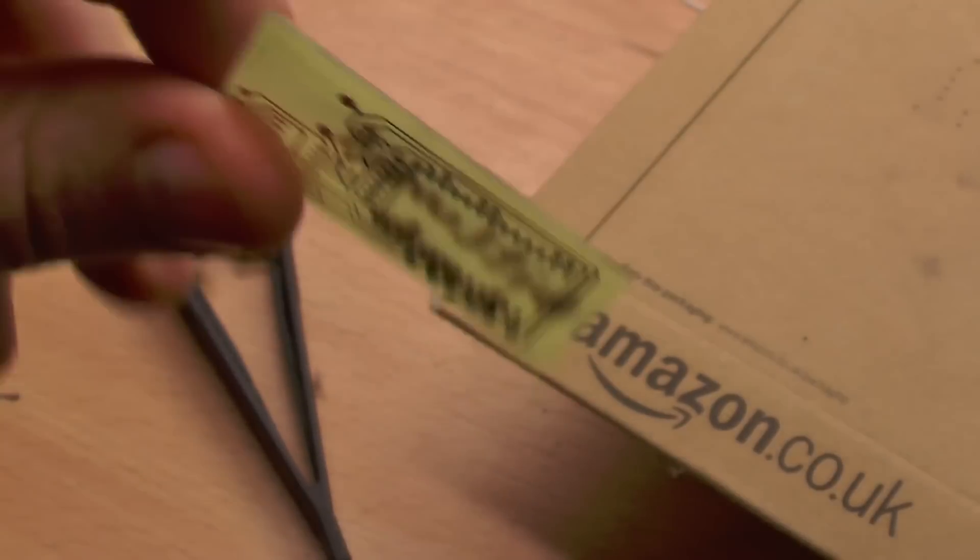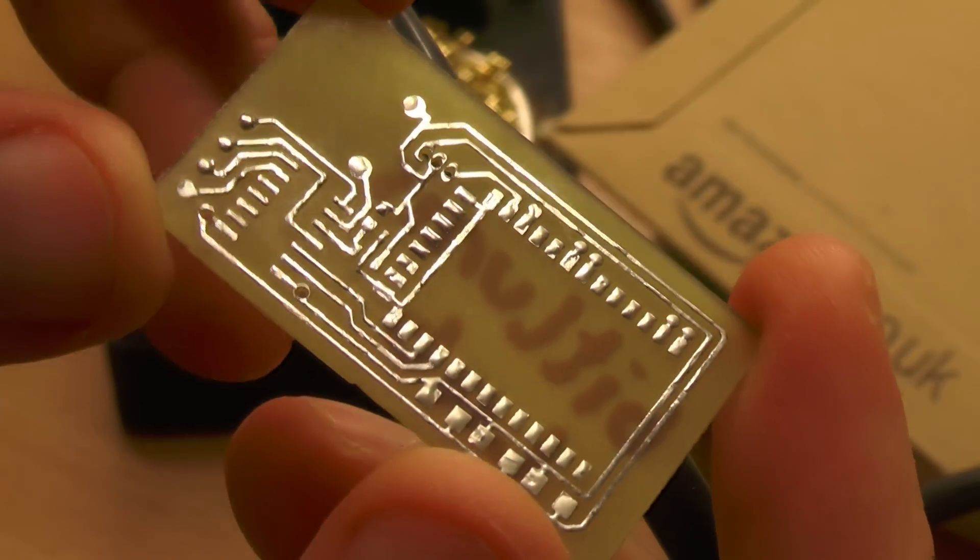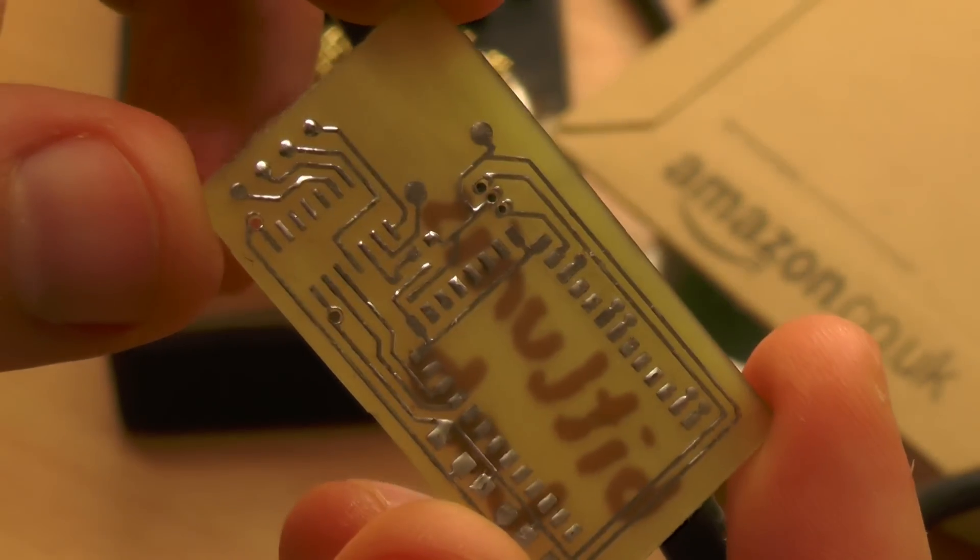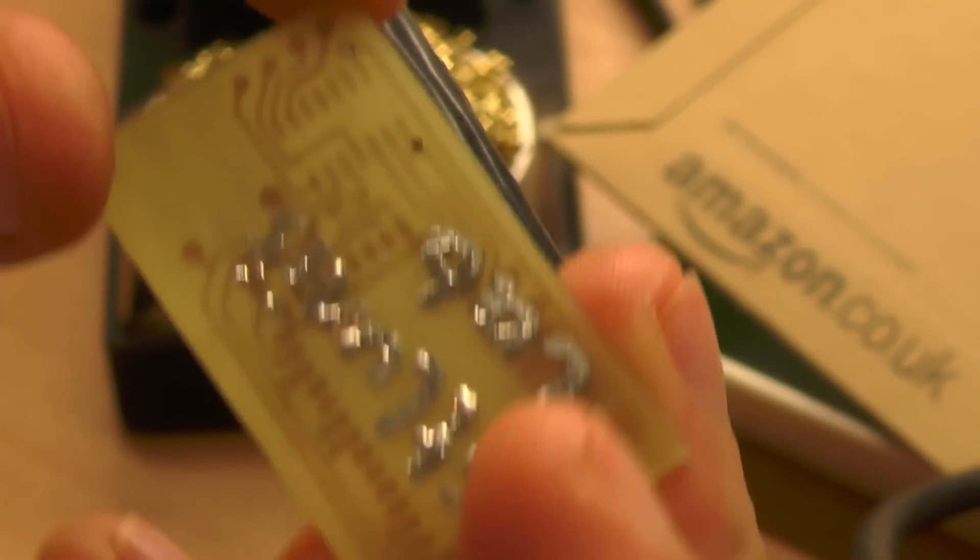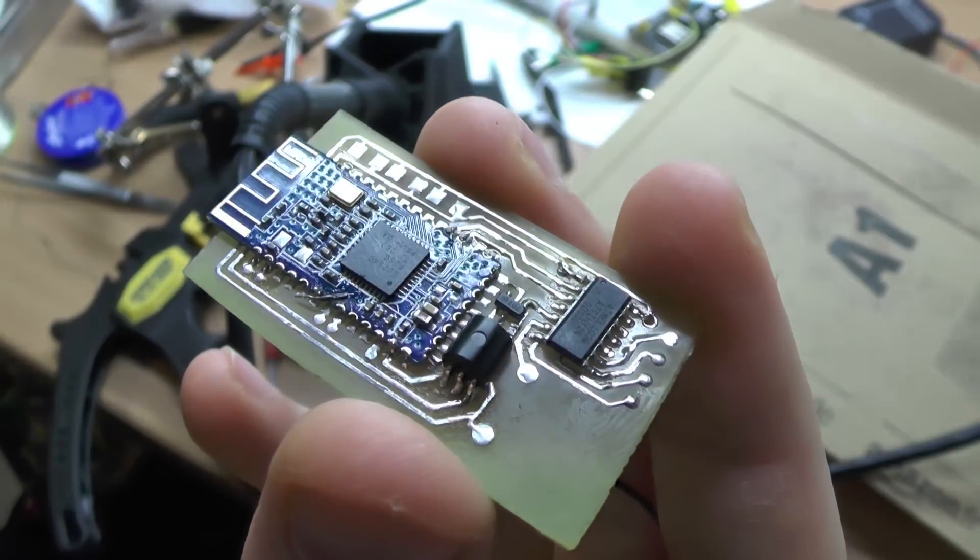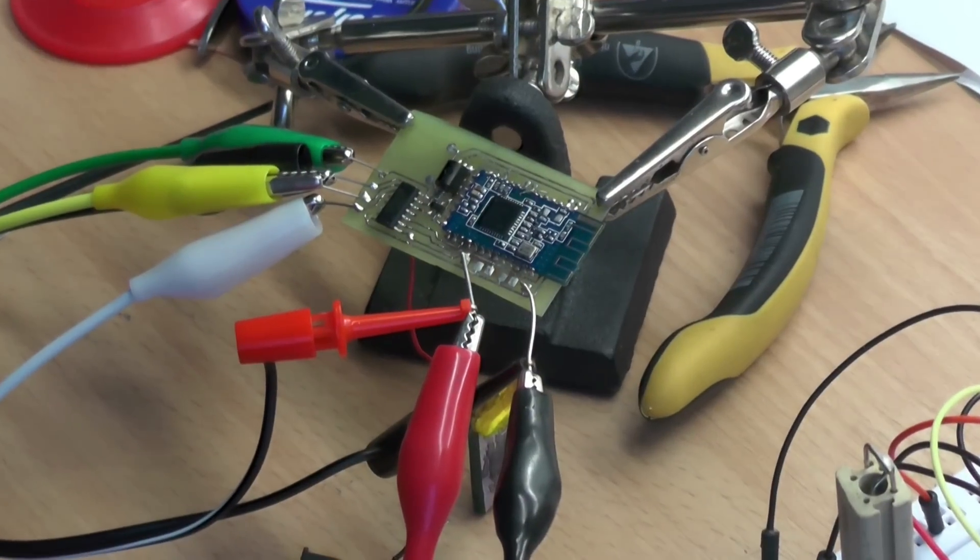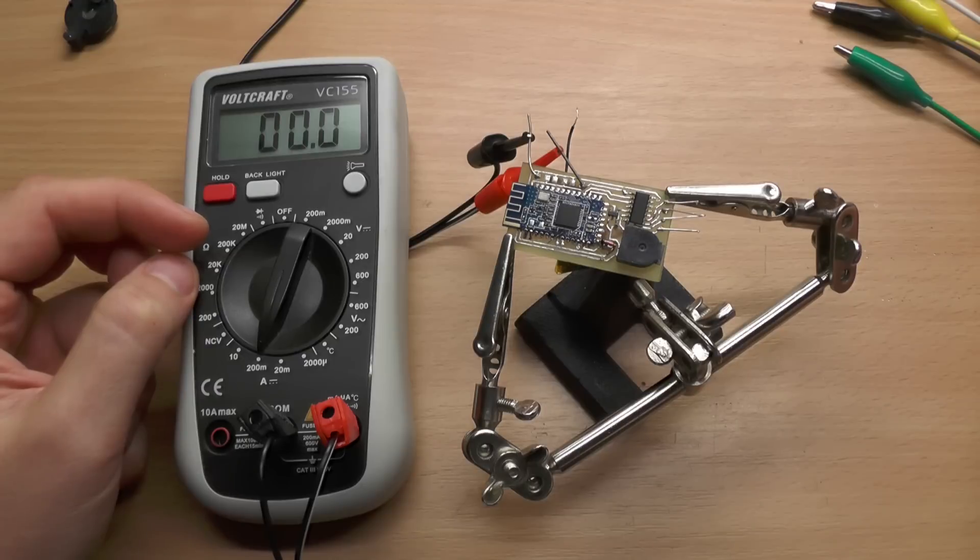I have added some pads for the in-system programmer as well as some additional points for the HM10 module and three spots for some additional caps. The regulator didn't work quite well so I just replaced it with the diode for its voltage drop. The device worked already but it wasn't perfect.